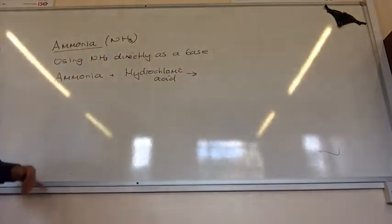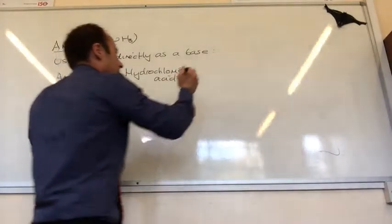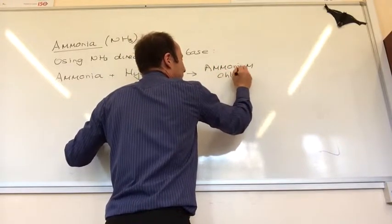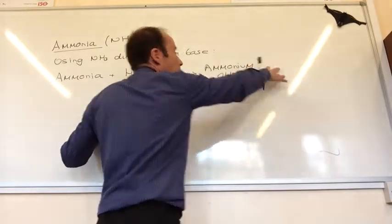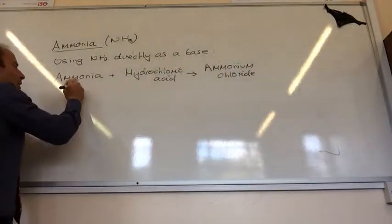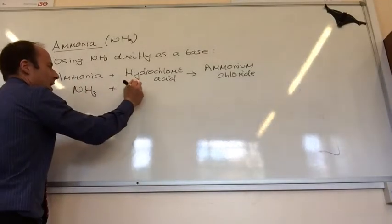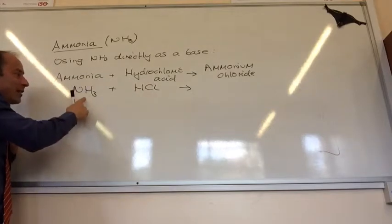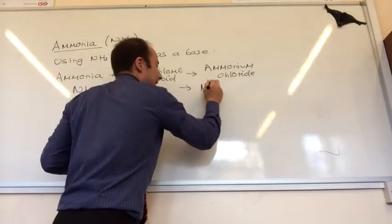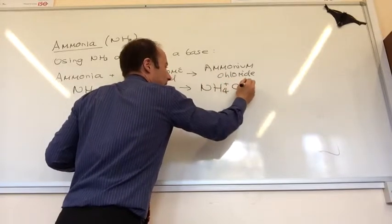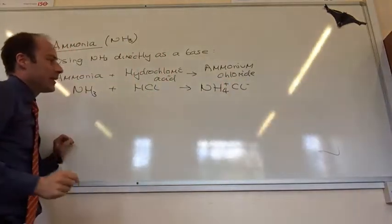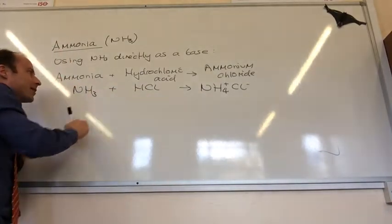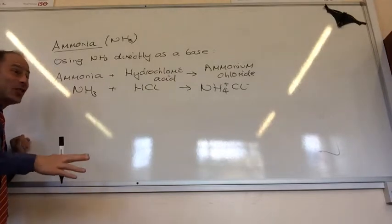Ammonia becomes ammonium chloride. A key thing to know: no water. Why is that? Well, ammonia is NH3 and hydrochloric acid is HCl. All that happens is that hydrogen gets transferred to the ammonia to give NH4 plus, and the Cl is still Cl minus — it is accepting the proton, that H plus. So that's its use directly as a base.